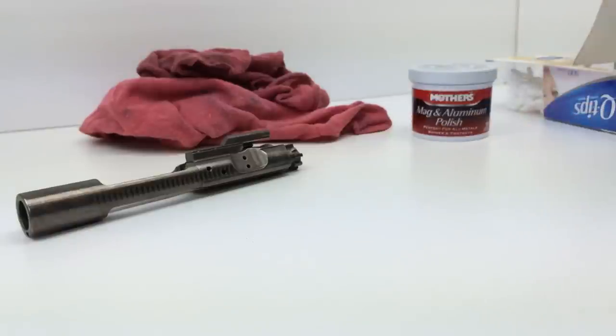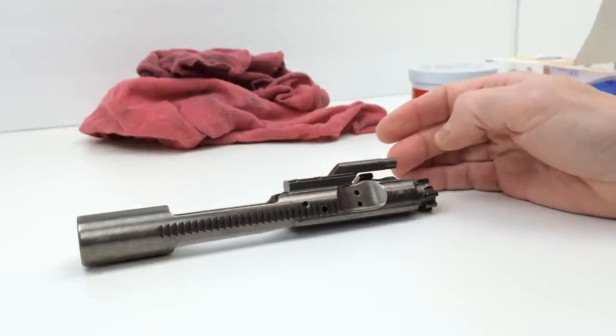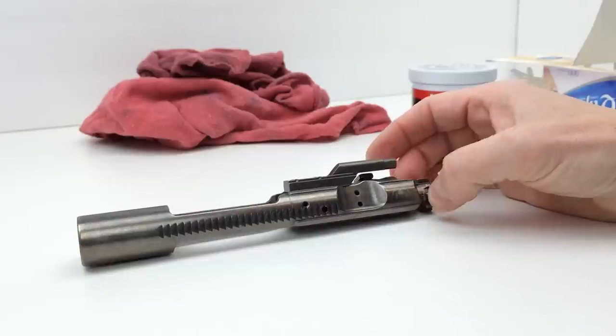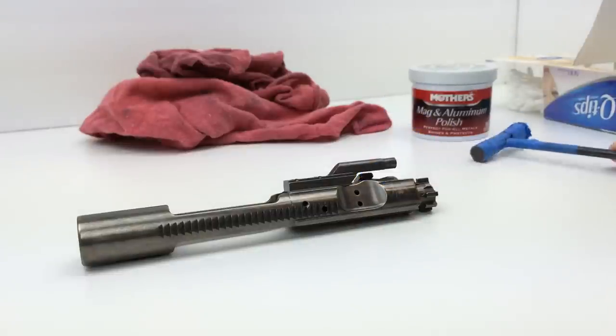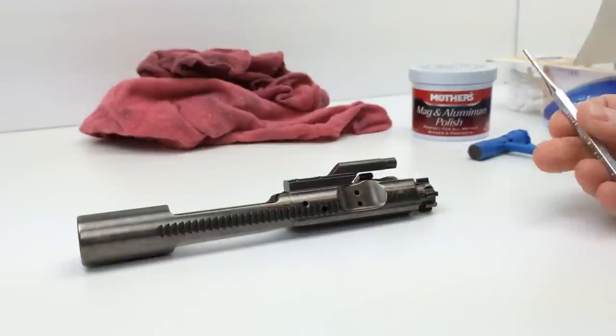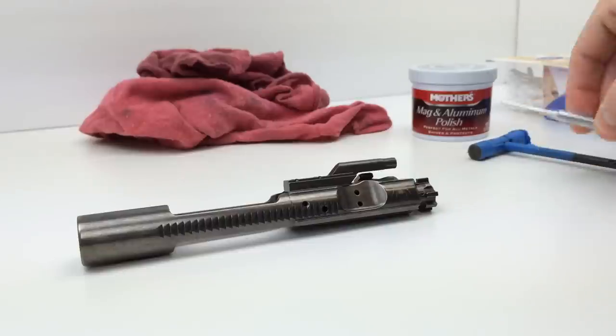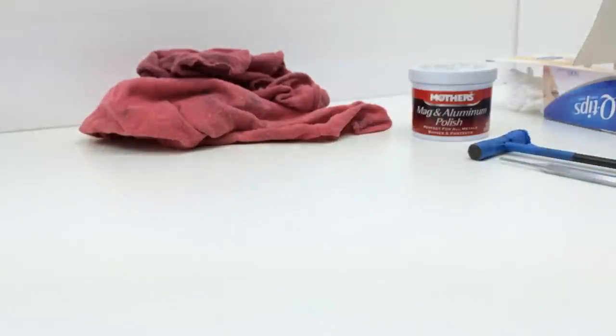You're going to need a couple of rags for this process. I use one rag for applying the polish. I use another rag for actually wiping down the surface when I'm done. You're also going to need a gratuitous amount of Q-tips for this process. You're going to also want to take your bolt carrier group apart. You're going to want to take your firing pin and your bolt out. So, you'll need the appropriate tools for doing that, which may or may not include a small hammer and a punch.